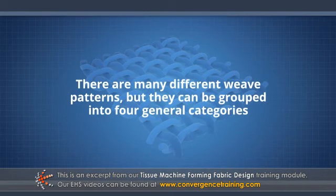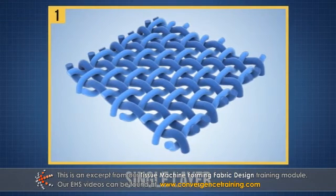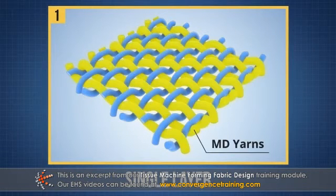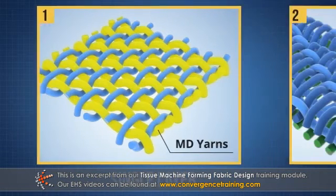The four fabric styles are: single layer — one set of CD yarns woven together with one set of MD yarns.